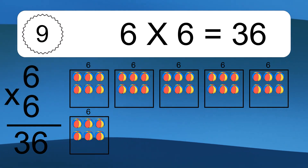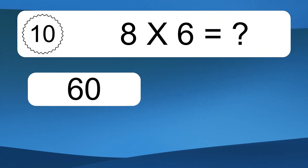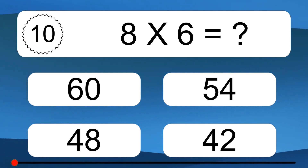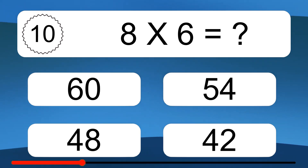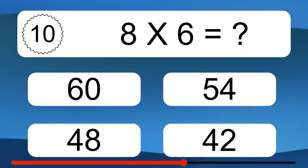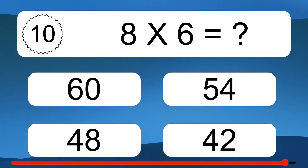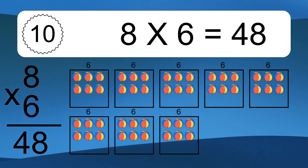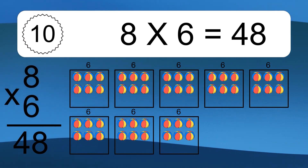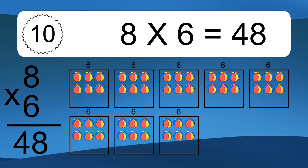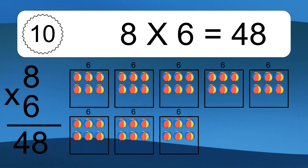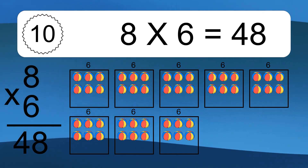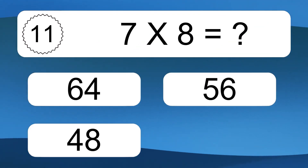This equals 36 balls. We have 8 boxes, and each box has 6 colorful balls inside. If you count all the balls in all the boxes together, you will have 8 times 6 balls. This equals 48 balls.